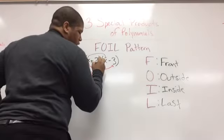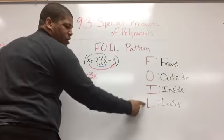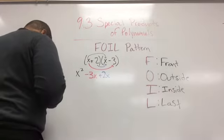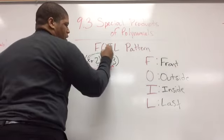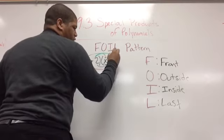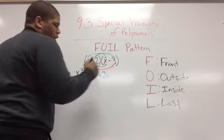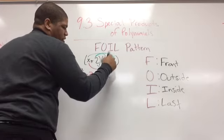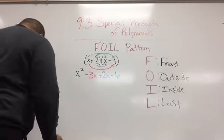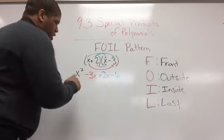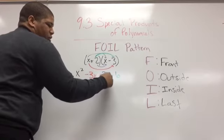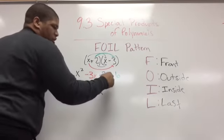Then I want to do the insides — 2 times x — that's going to be plus 2x. Then I want to do the last two numbers, which is 2 and negative 3, because they're the last two in each of these polynomials — so 2 times negative 3 is negative 6. Once I get to this point I'm just going to combine my terms: x squared moves down, negative 3x plus 2x gives me negative x, minus 6. So that will be my answer.